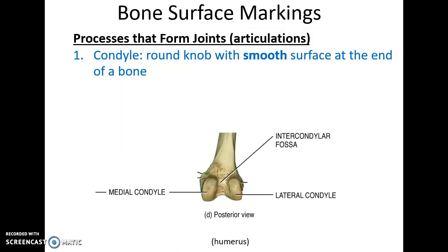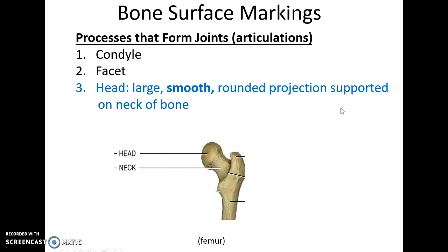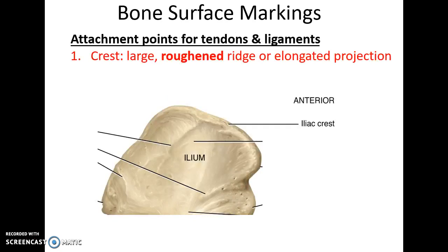Some processes form joints; when they do, they are smooth to reduce friction. Rounded knobs are smooth and are often called condyles. Facets are flat and smooth, sometimes slightly curved, and can also occur at moving joints. A head is a very large smooth rounded projection; often following the head is a structure called the neck, which is not smooth. Rough projecting areas are often attachment points for tendons and ligaments — for instance, a crest is a long roughened ridge that serves as muscle attachment.